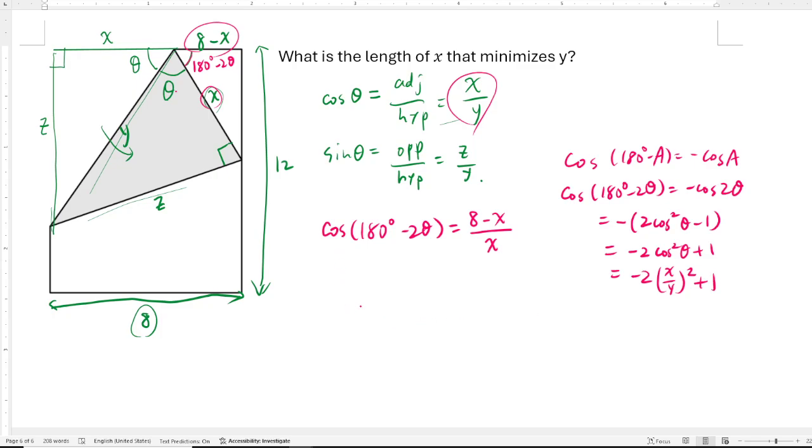Okay, so what does that tell us? Well it tells us that 1 minus 2 times x squared over y squared is equal to 8 minus x over x. And then what we are going to do is we're going to first rewrite this as 8 over x minus 1, so that we can move the one to the other side. And that gives you negative 2 x squared over y squared equals to 8 over x minus 2. And then we are going to rewrite this again as 8 minus 2x over x.